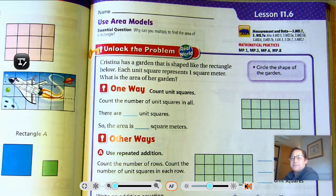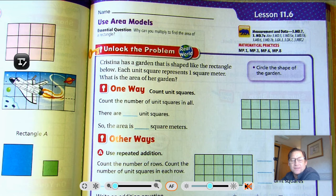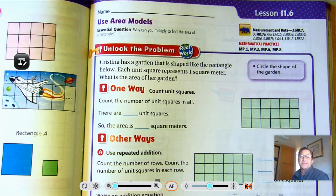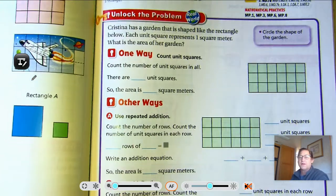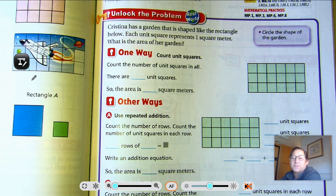Hello everybody. In this lesson we're going to continue with lesson 11.6: Use Area Models. In the last couple sessions we've been talking about and exploring the concept of area. Our essential question today is: why can you multiply to find the area of a rectangle? We're on page 473 of the third grade textbook. The problem: Christina has a garden that is shaped like a rectangle. Each unit square represents one square meter. What is the area of her garden?